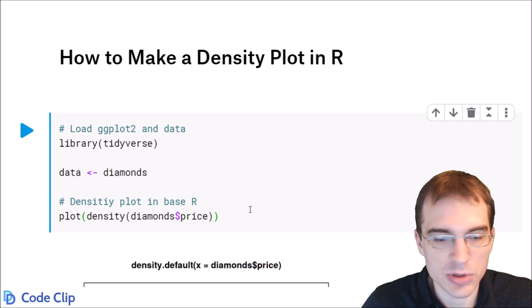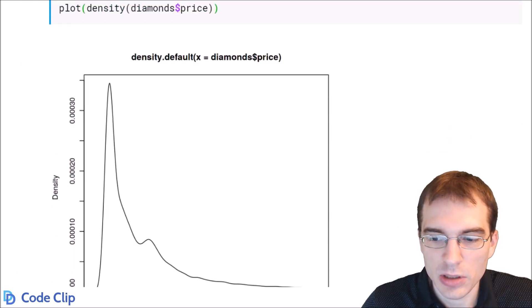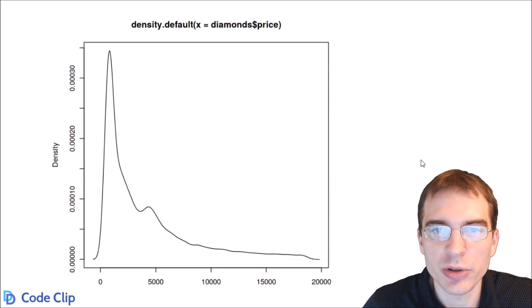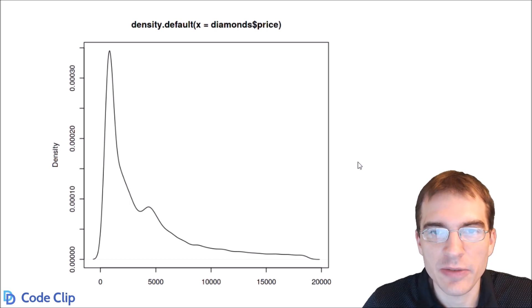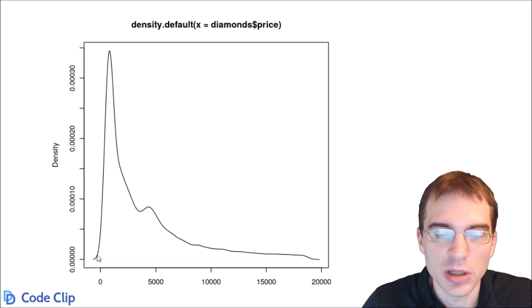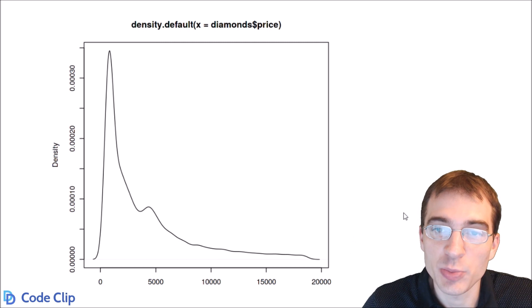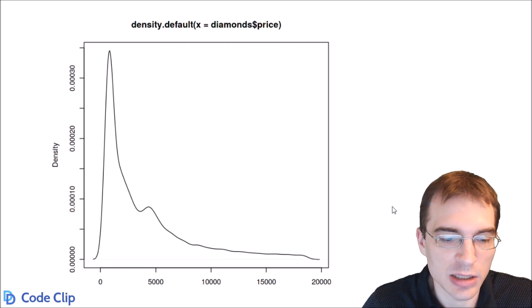Let's run this and see what the result looks like. The density plot is showing you what the distribution looks like. It's similar to a histogram, except instead of having discrete bins, you have this continuous approximation for what the distribution looks like based on the data that was passed in.